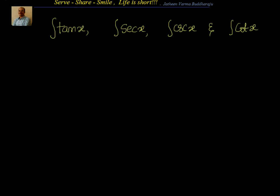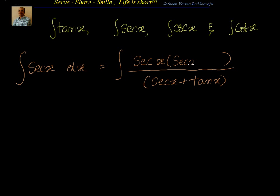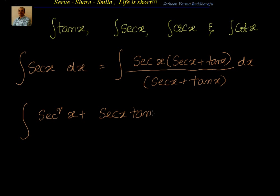For the integral of sec x, we have a problem because sec x is sec x over 1, and we can't take 1 as a function because its derivative is 0. We need to find a trigonometric function to multiply both numerator and denominator such that the denominator becomes f(x) and the numerator becomes its derivative. For that, we multiply with sec x plus tan x in both numerator and denominator. The numerator becomes sec²x plus sec x tan x, and the denominator is sec x plus tan x.